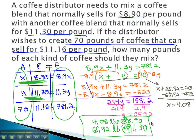When we mix these two together, we'll end up with 70 pounds that will sell for $11.16. And that completes our problem.